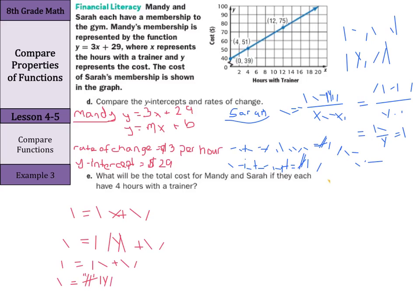Now, that's Mandy's. Sarah's, we actually do not even need to calculate this time. Because we're given the point 4, 51. And so, we can just look right there and say she pays $51. So, for four hours, Mandy pays $41. Whereas, Sarah pays $51.